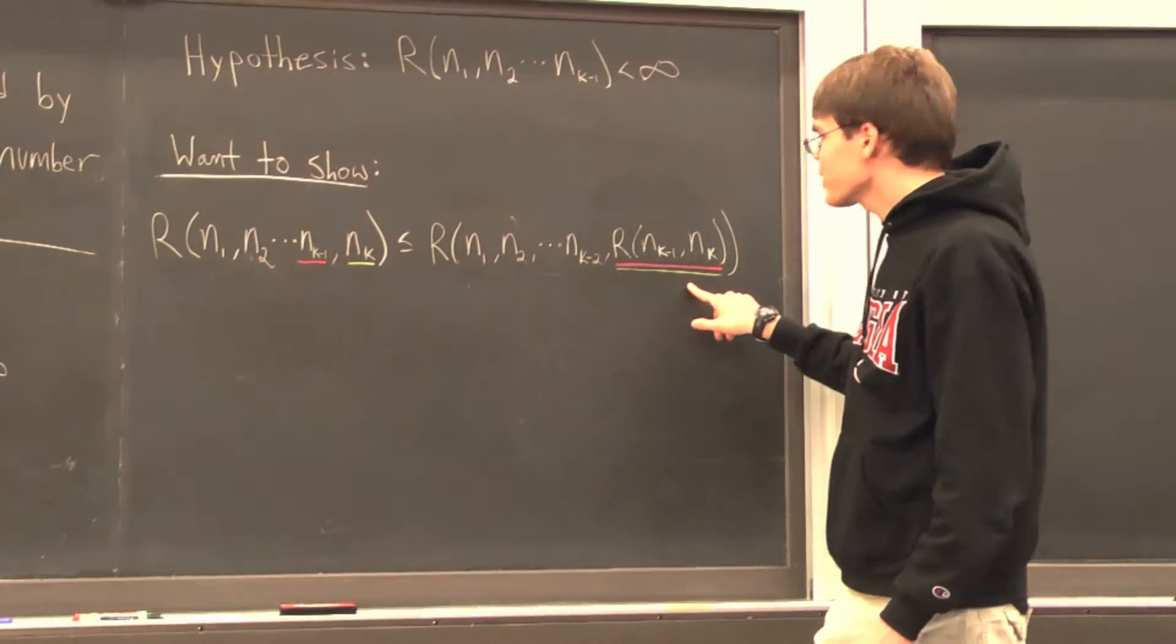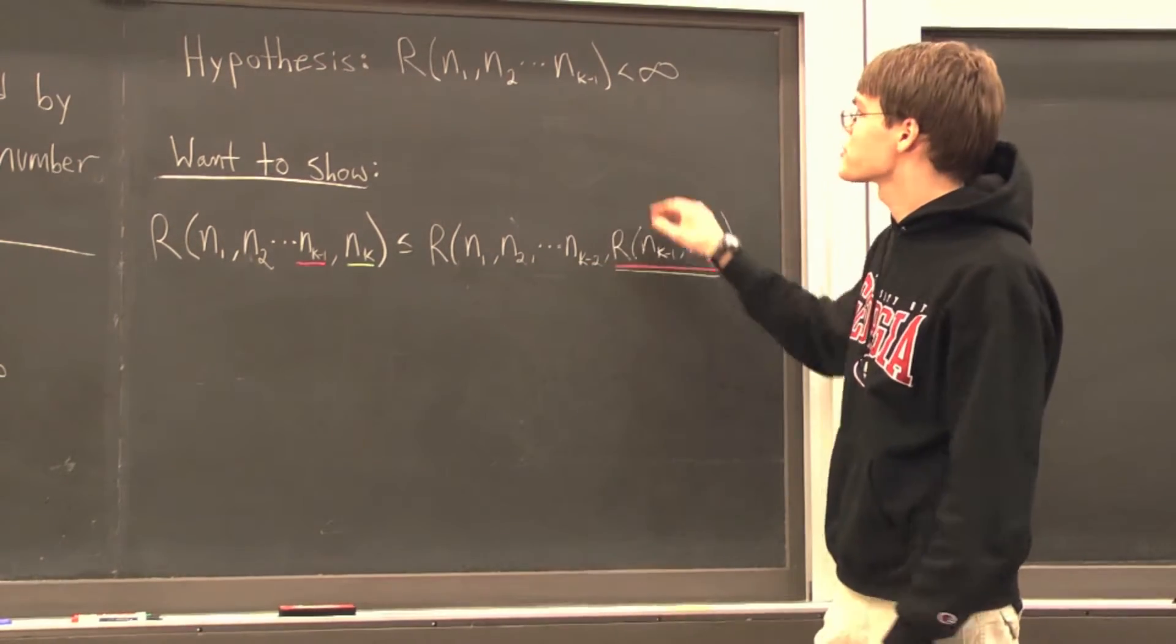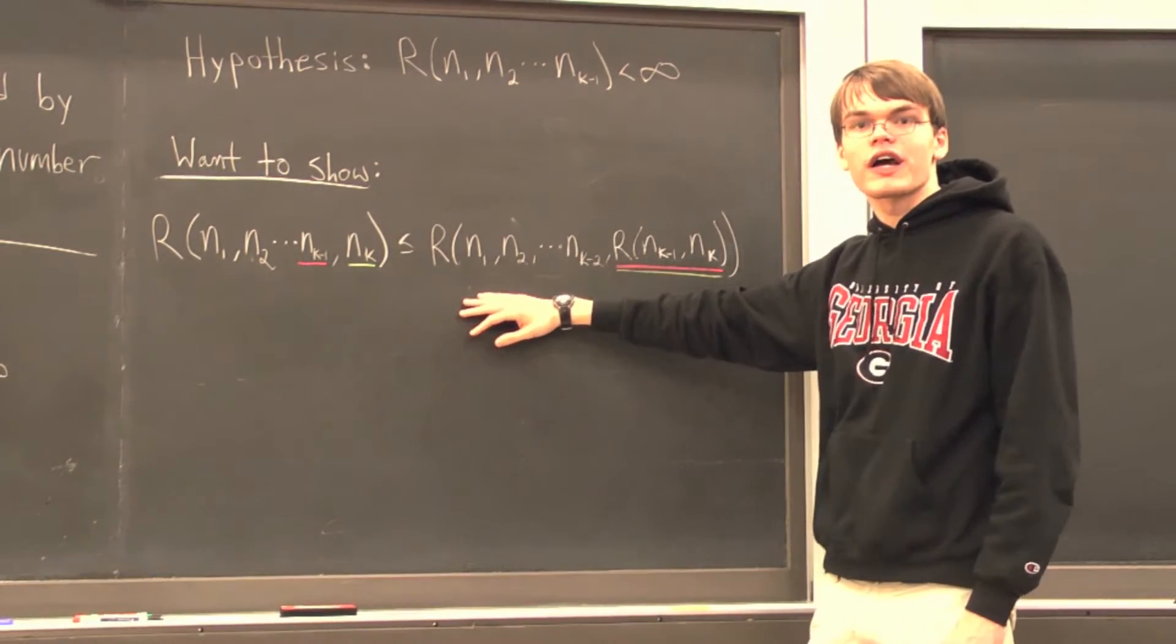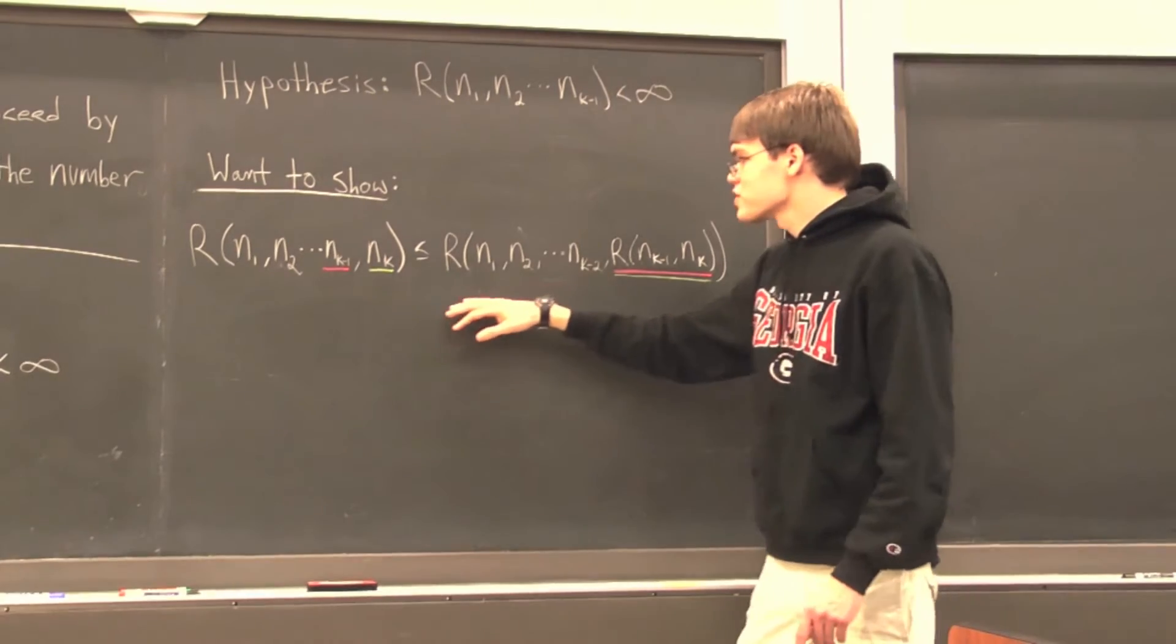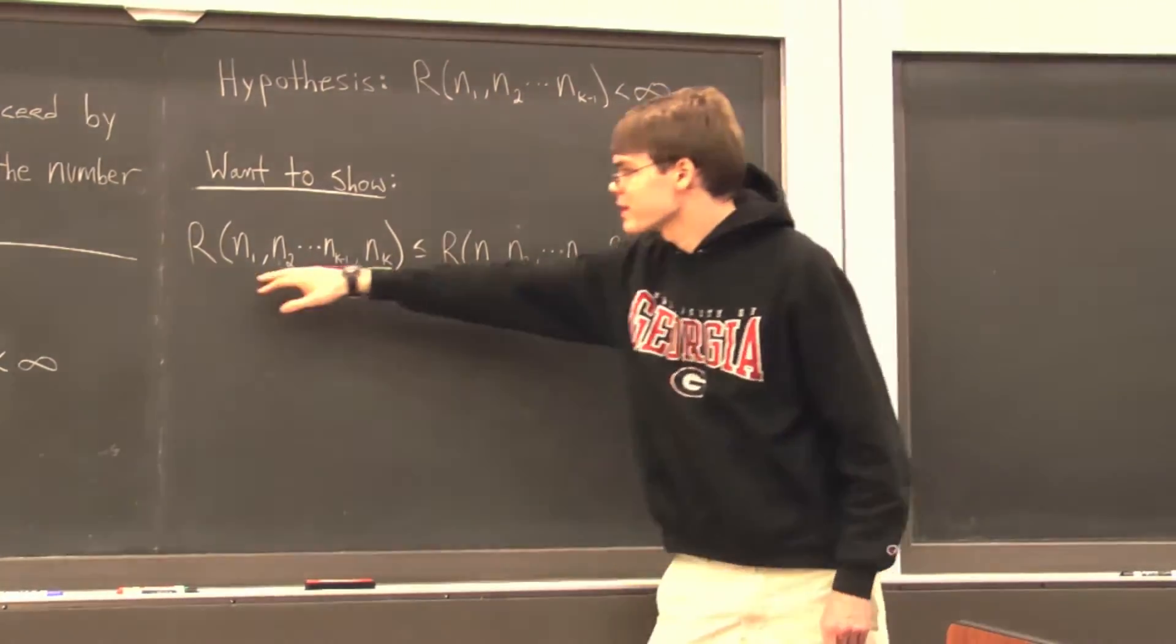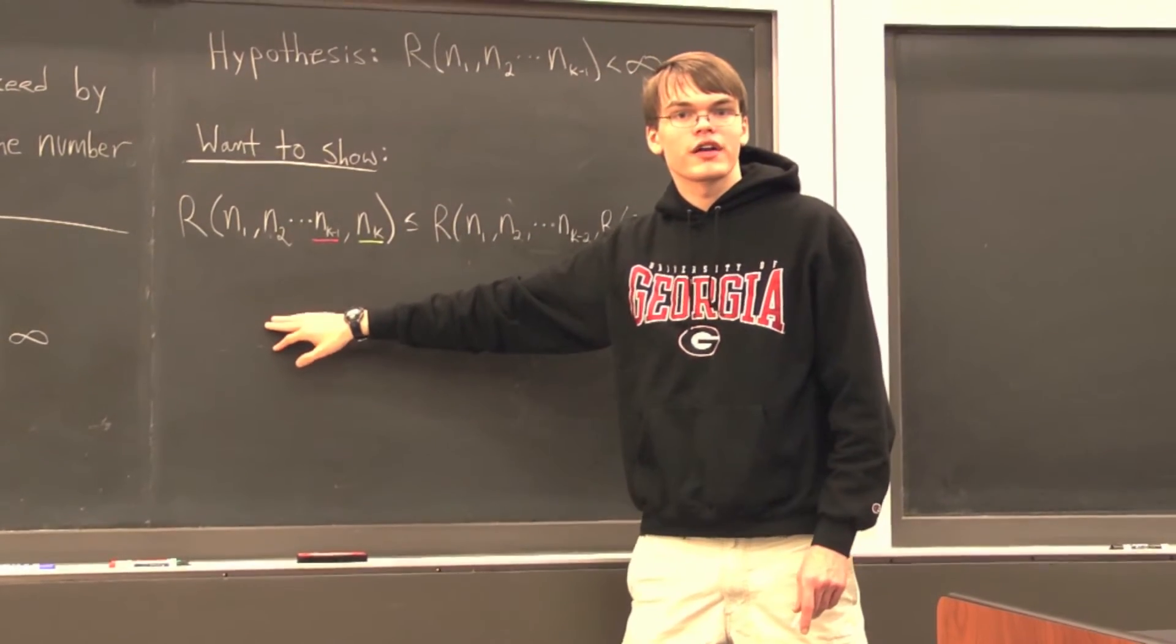Now, there's only k minus 1 terms here, or k minus 1 colors, which means by our induction hypothesis, our right side is finite. And because our right side is finite, if we can show that this inequality holds, that means that our Ramsey numbers in k colors must also be finite.